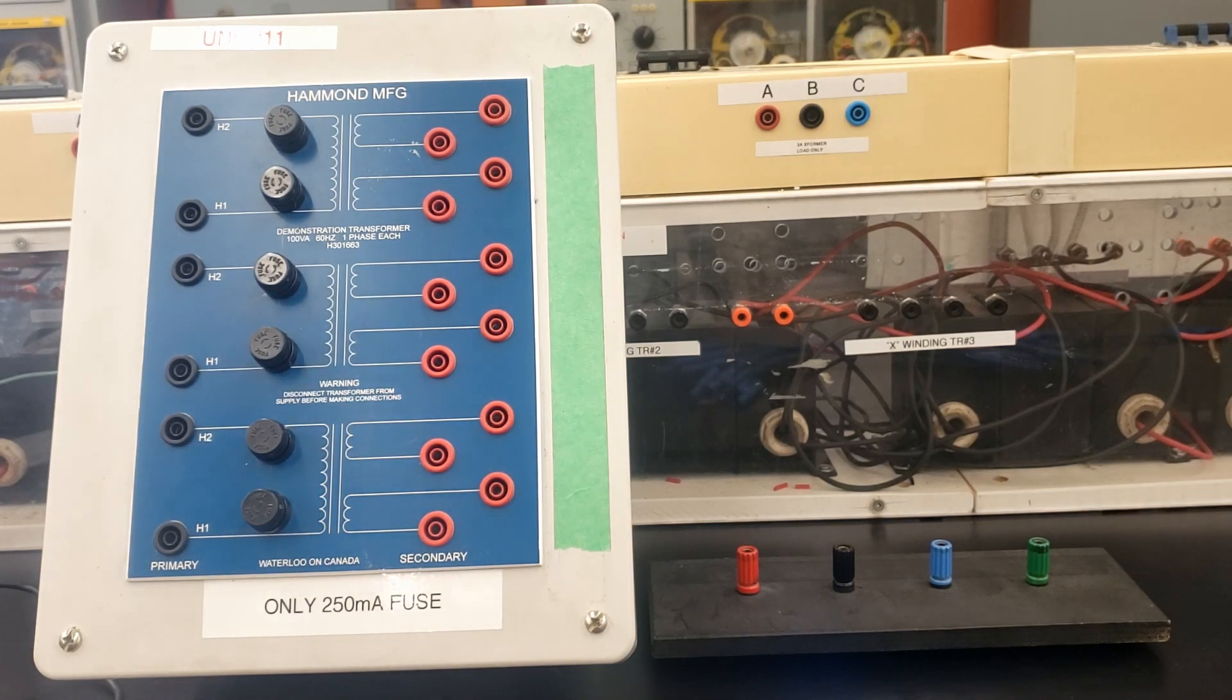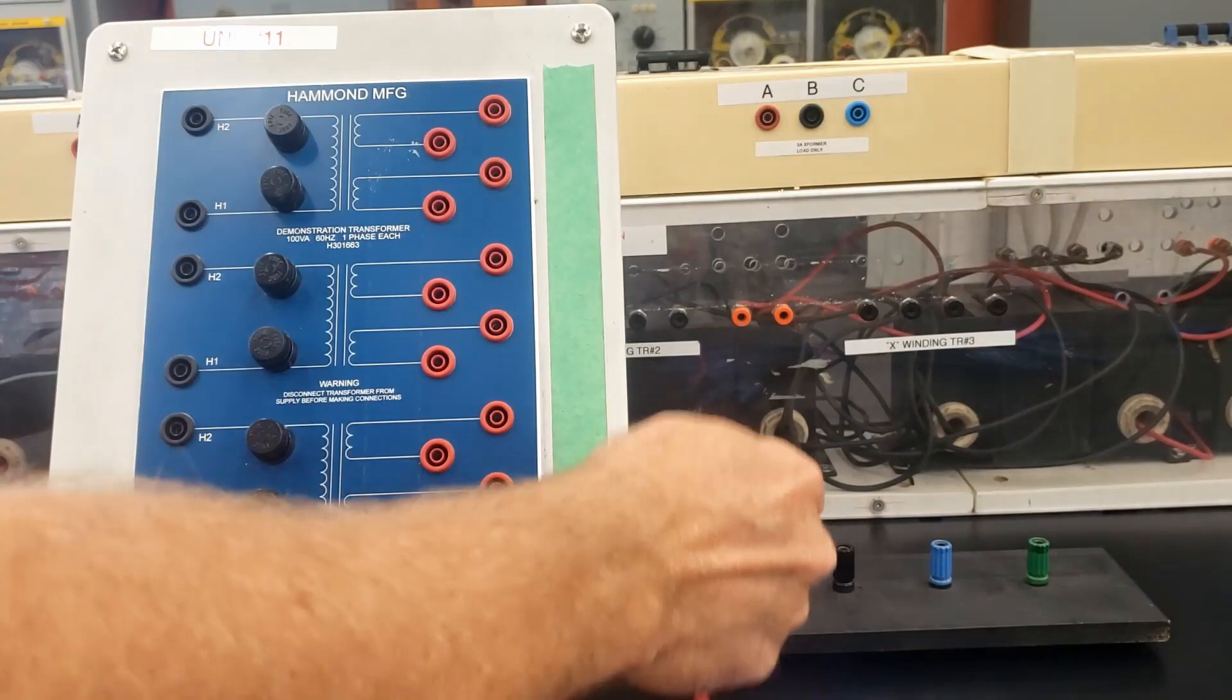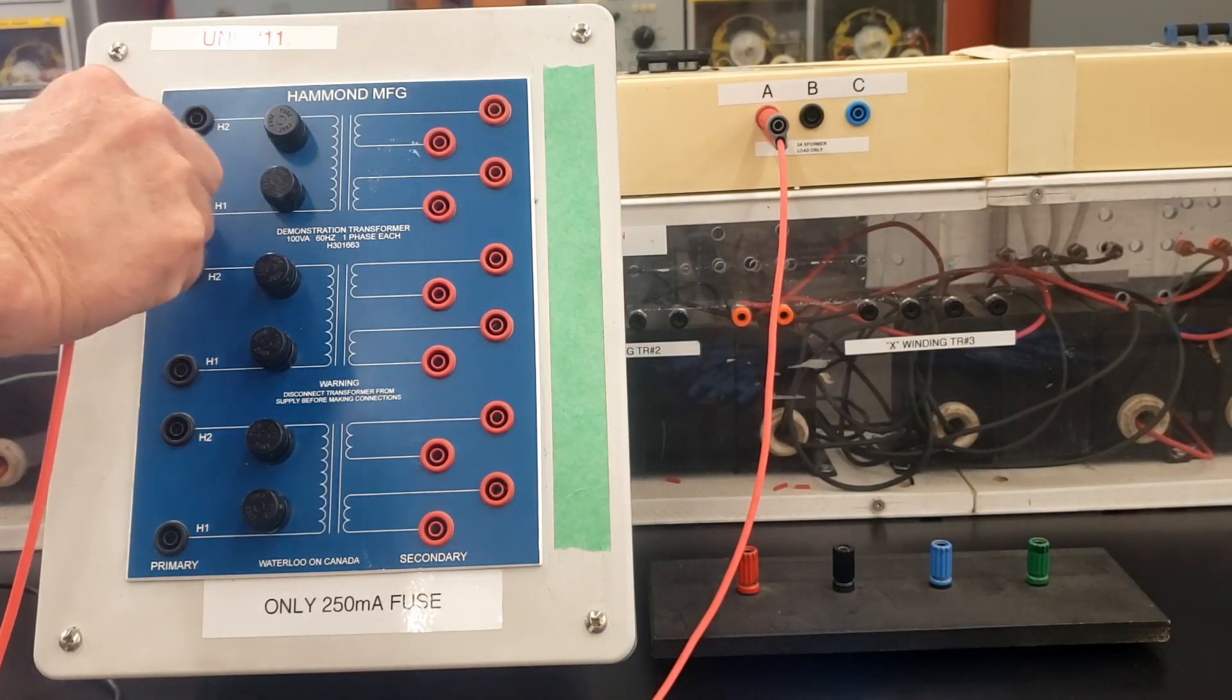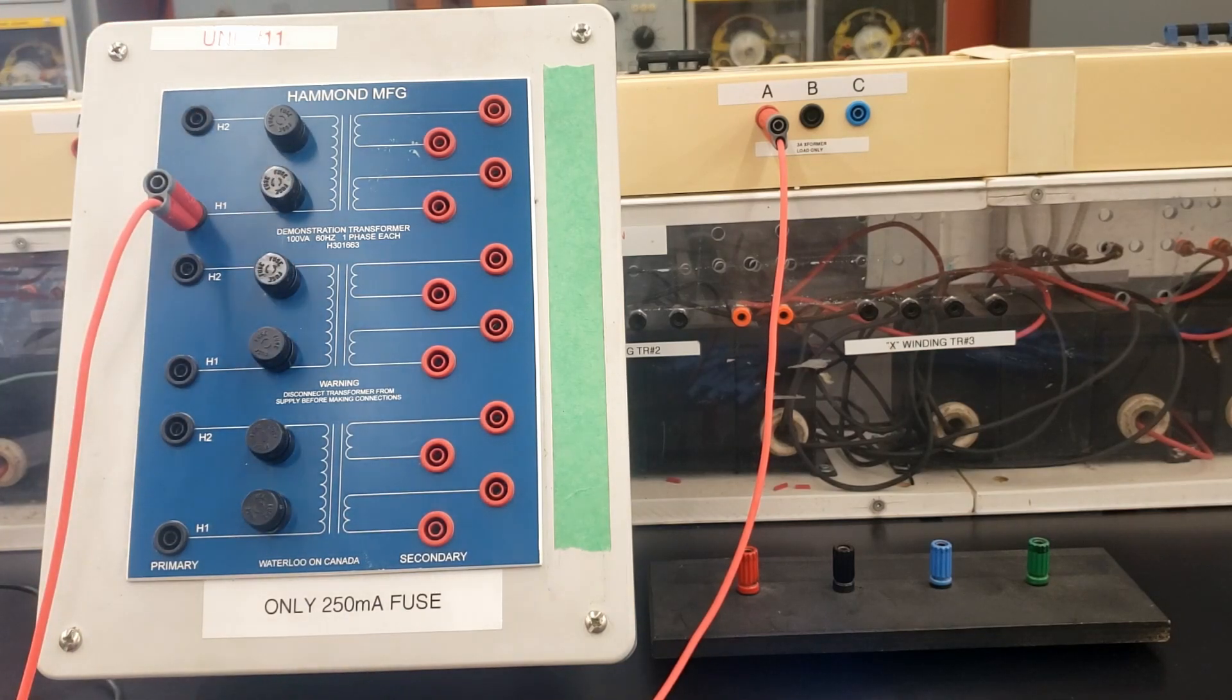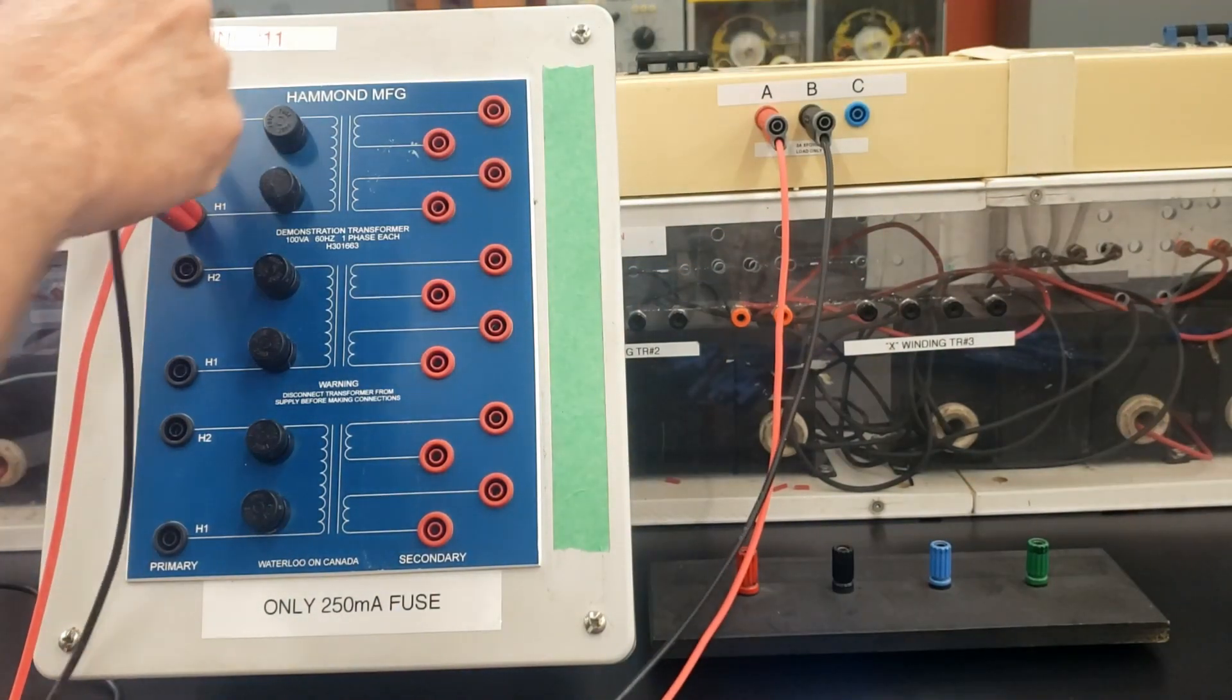We're going to feed H1 and H2 off of line 1 and line 2. We have line 1, line 2, line 3 from our three-phase source. There's 2-8 available in the shop. I'm going to feed line 1 to H1, and I'm going to feed line 2 to H2.